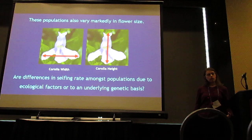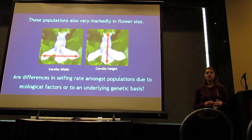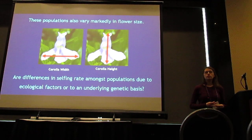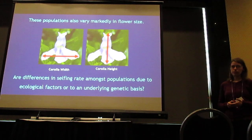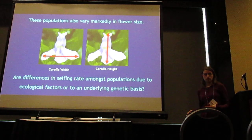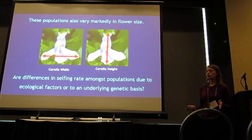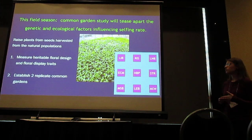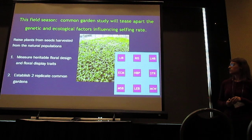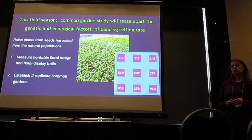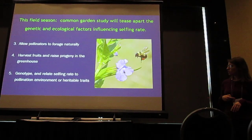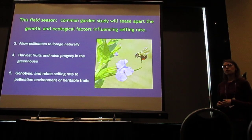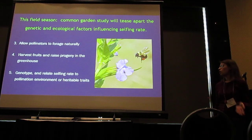These populations also vary markedly in flower size. In the next talk, Randy Mitchell will describe the among-population variation in floral traits and show how these traits are associated with population selfing rates. The question is whether differences in selfing rate among populations are due to ecological factors such as the pollination environment, or due to an underlying genetic basis. To answer this, this field season I will raise plants from seeds harvested from natural populations, measure heritable floral and display traits, and establish two replicate common gardens where I will allow pollinators to forage naturally, then harvest fruits and genotype progeny to relate population selfing rates to either the pollination environment or heritable traits.